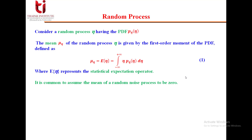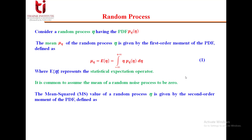The mean squared (MS) value of a random process η is given by the second-order moment of the probability density function. The first moment gives us the mean, and the second-order moment gives us the mean squared value of the random process η.